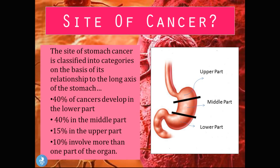The sites of stomach cancer are classified into categories based on the relationship to the long axis of the stomach. Dividing the stomach into upper, middle, and lower parts: 40% of cancers develop in the lower part, 40% in the middle part, 15% in the upper part, and 10% involve more than one part of the organ.